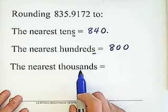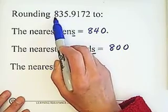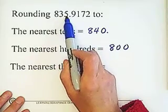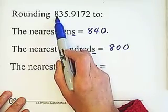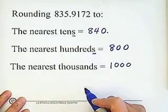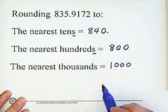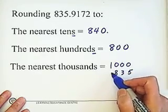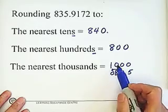Rounding to the nearest thousand: the thousands place is 0, because 835 is less than 1,000. But if we round to the nearest thousand, we check the right side of the thousands digit, which is 8. Since 8 is greater than 5, round up and add 1, giving 1,000. So 8 is replaced by 0, but you still keep the decimal point in place. Add 1 to the thousands place, then replace 8 with 0. The answer is 1,000.